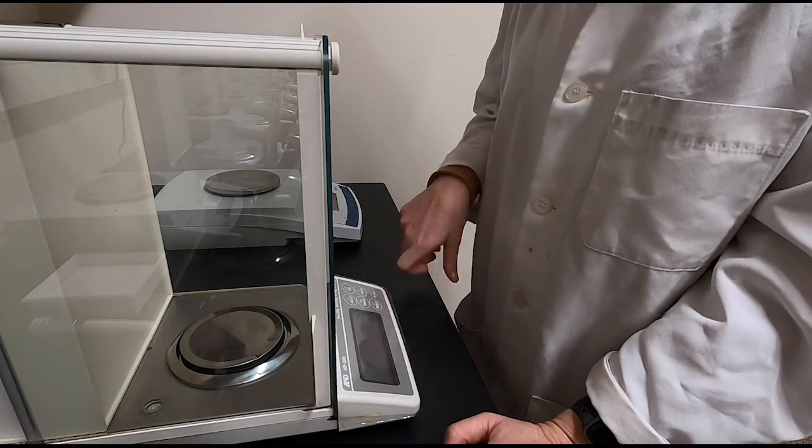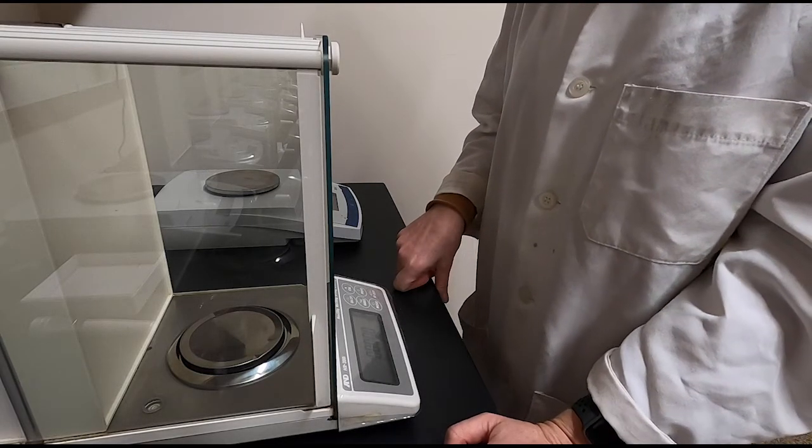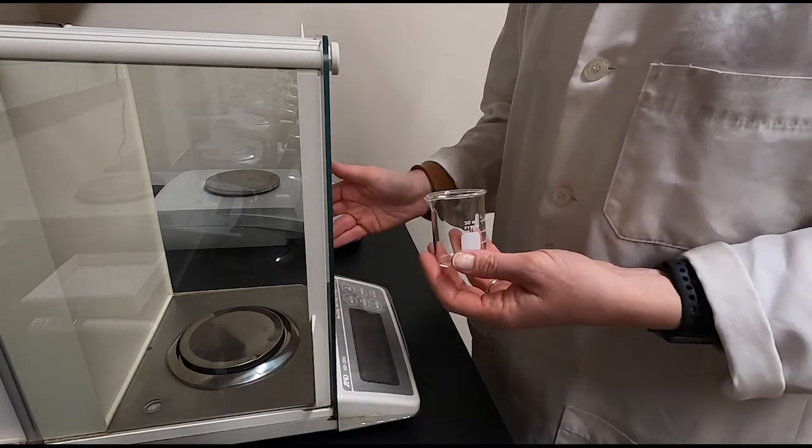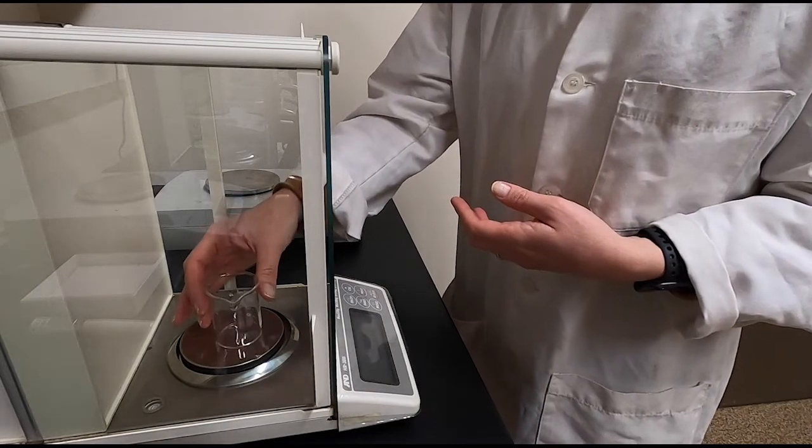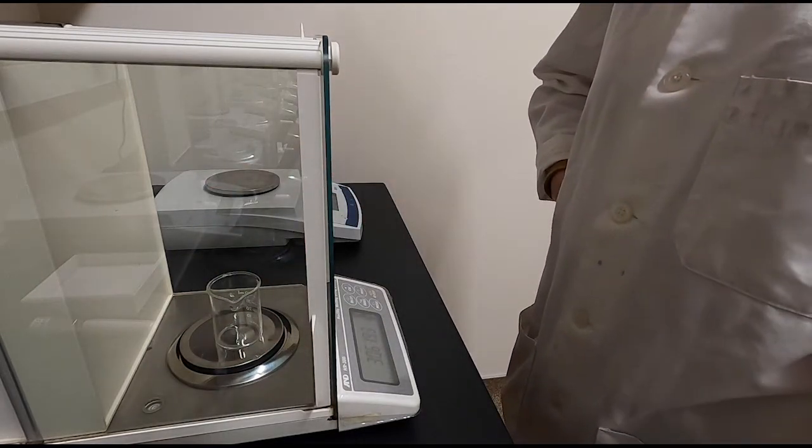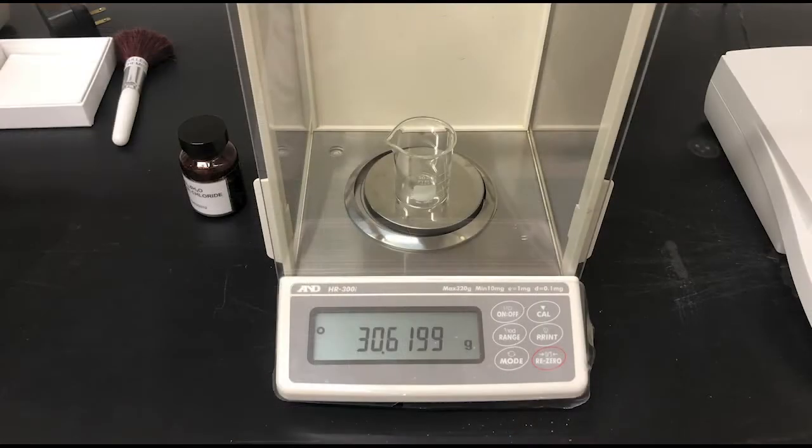We're going to weigh this out using the analytical balance. First I'm going to tare the balance so that it's zeroed out. Then I'm going to place a small beaker on the balance. Go ahead and write down the mass of the empty beaker in your lab notebook.